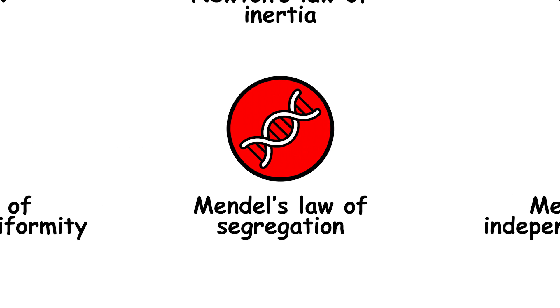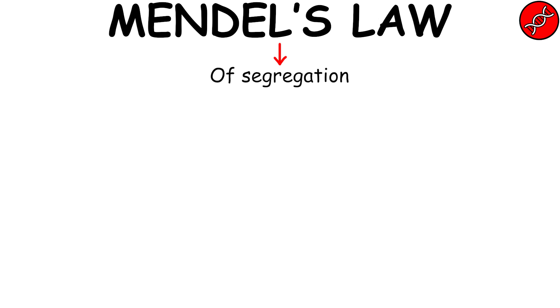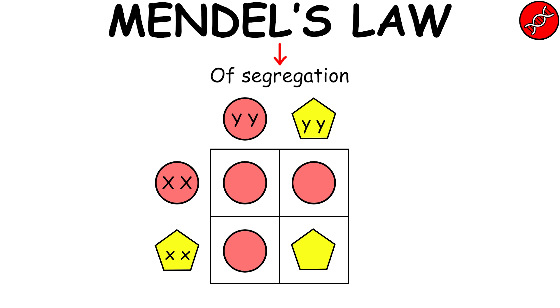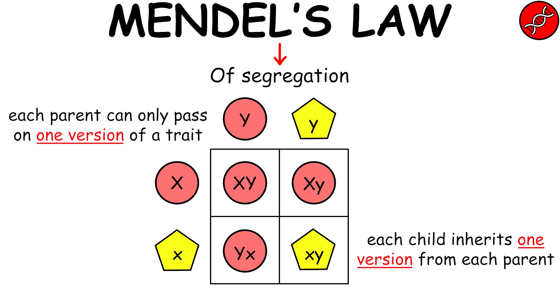Mendel's Law of Segregation states that during the formation of inheritance choices, the two versions of a trait separate. This means that a parent can only pass on one version of the trait, and the children can inherit only one version from each parent.